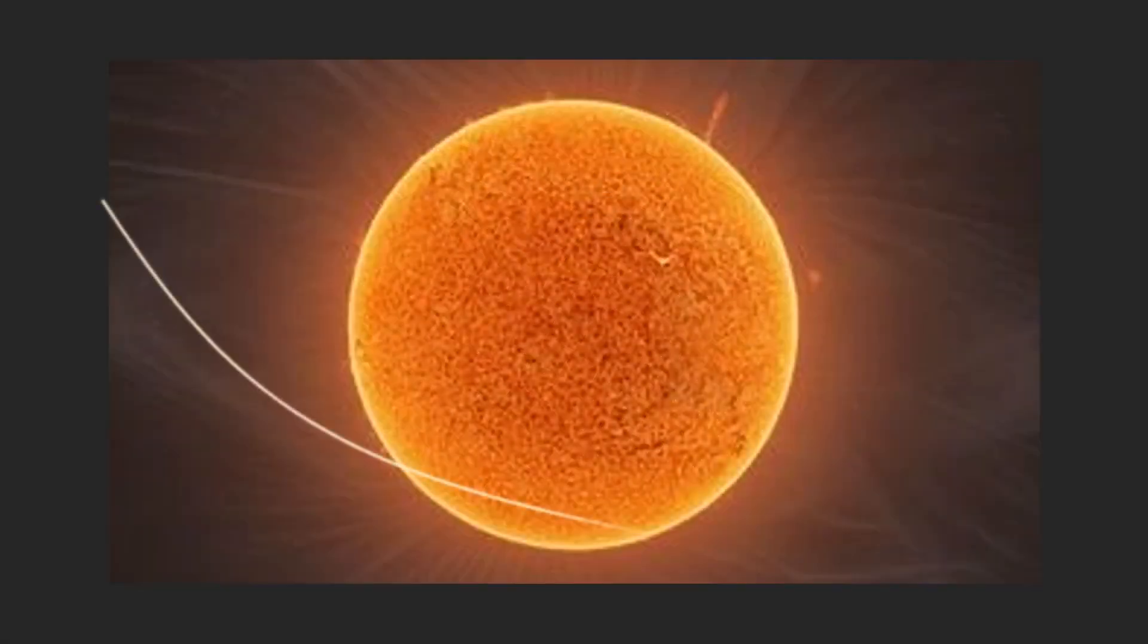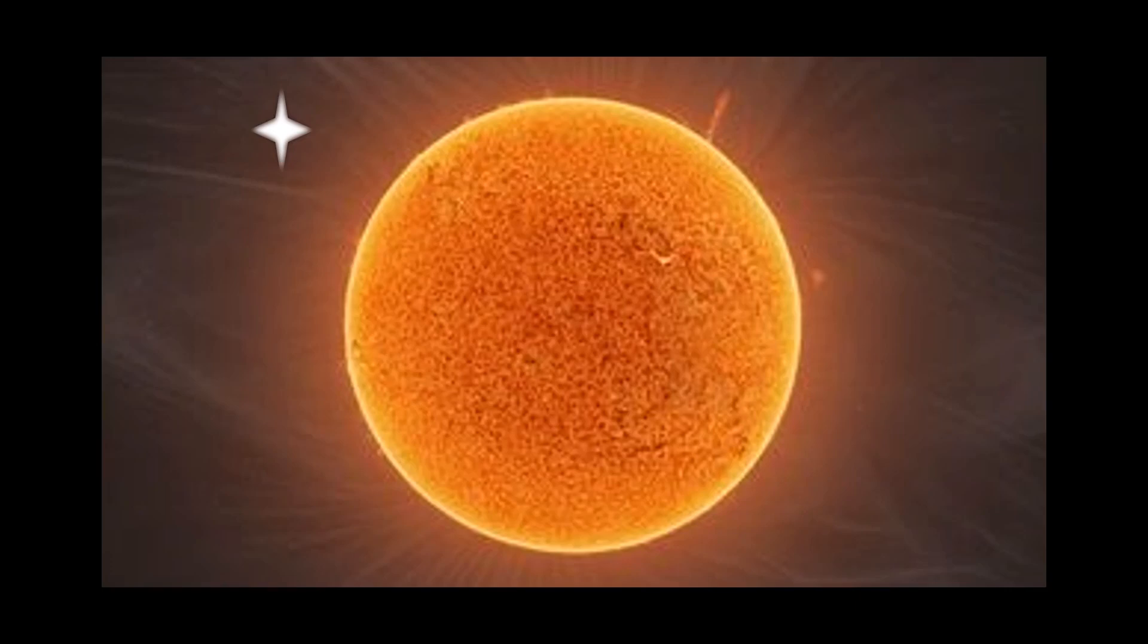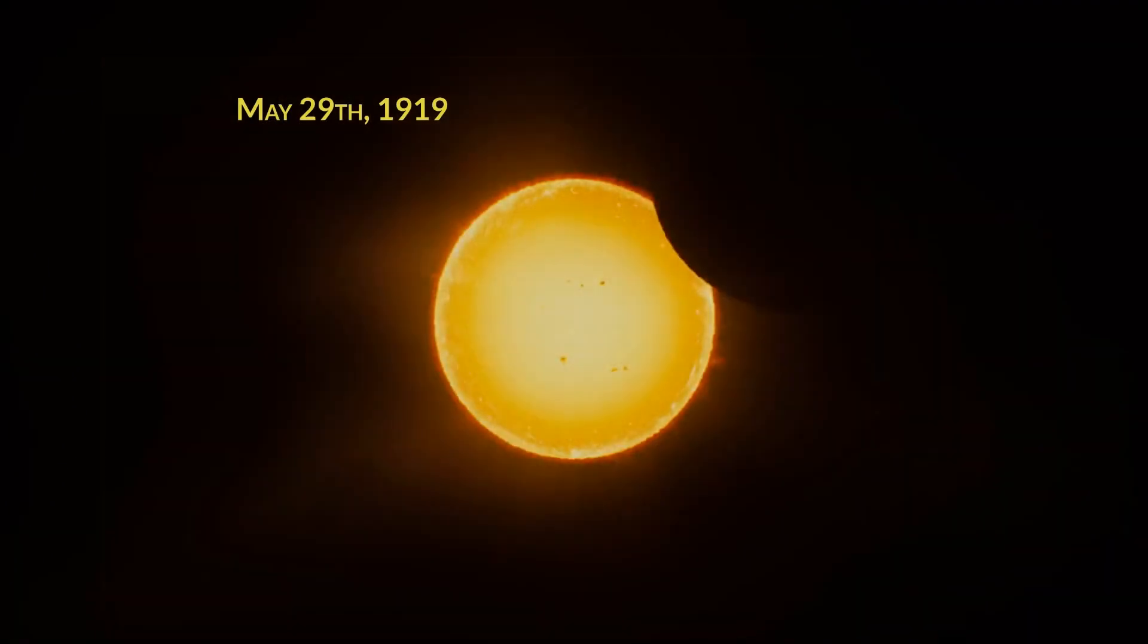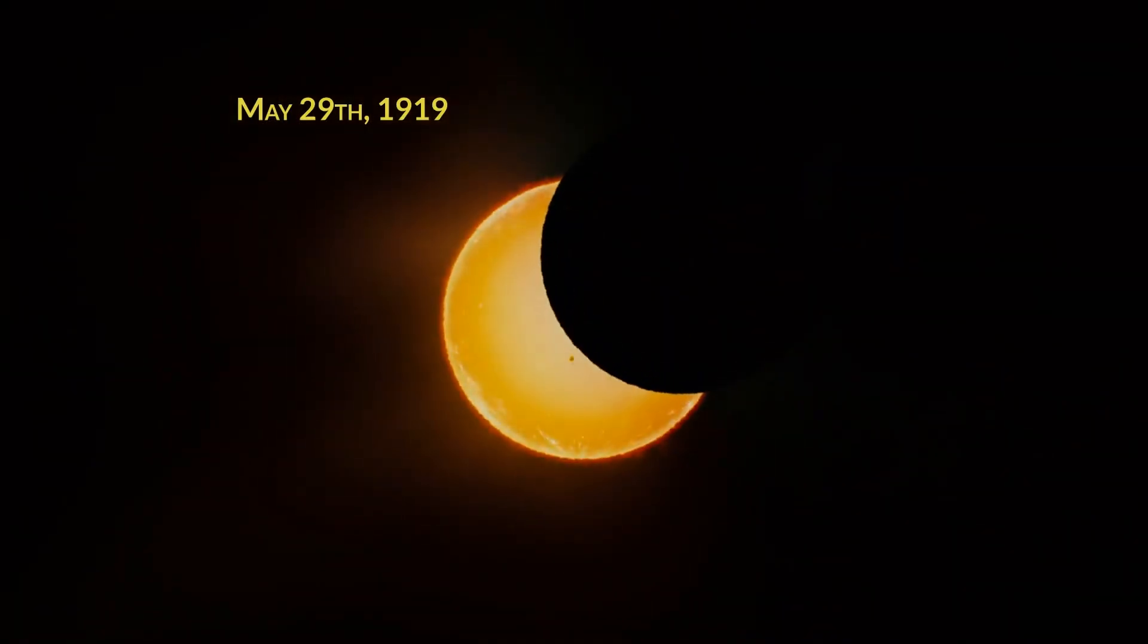Einstein explained the light coming from the stars is bent as it travels by the sun, causing the calculated distance to be slightly shifted from the real distance. The time to prove his theory came during the total solar eclipse on May 29, 1919.